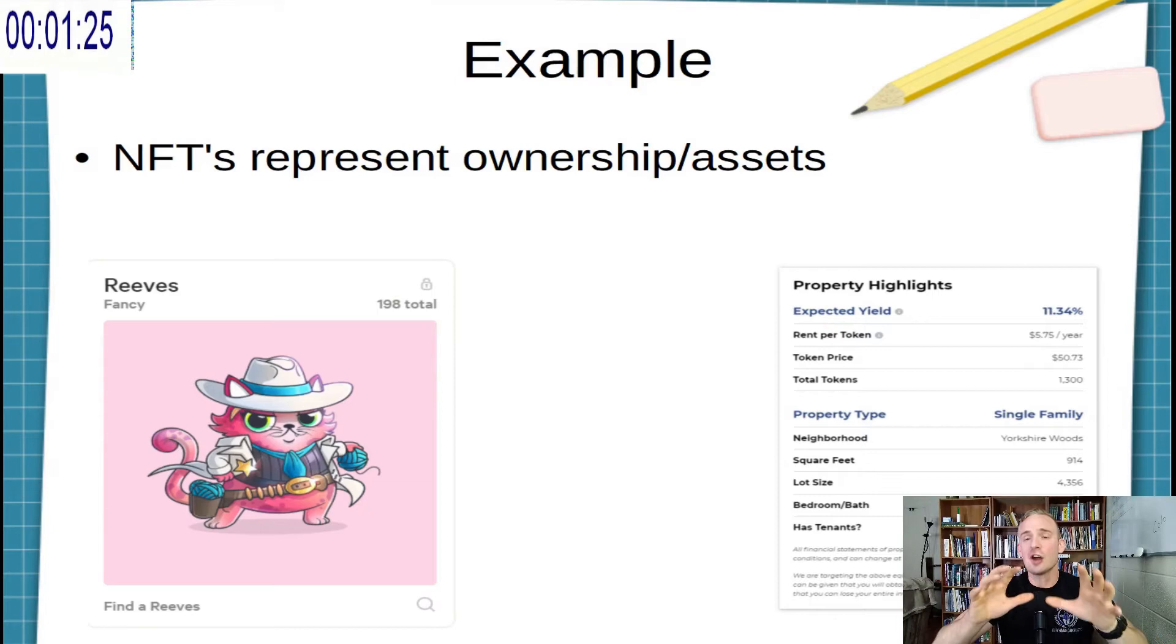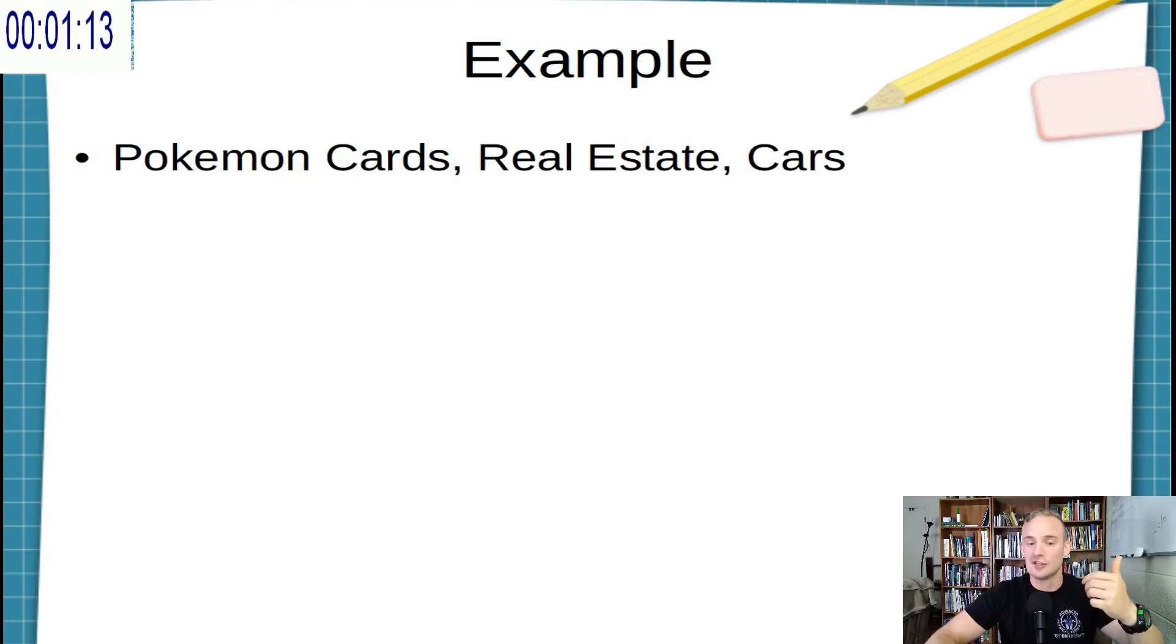By contrast, non-fungible tokens aren't really a means of payment. They represent ownership or a form of an asset. Examples include Crypto Kitties or Realty property that allows you to invest in real estate through tokenization.